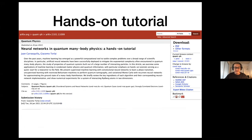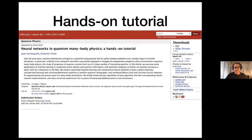Before I start, I wanted to mention that last week we posted this paper: 'Neural Networks in Quantum Many-Body Physics: Hands-On Tutorial.' We describe many of these techniques in that paper, including recurrent neural networks, and we provided code you can play with. It's very simple code but allows you to get started with all these ideas — variational Monte Carlo, quantum state reconstruction, and so on. I encourage you to check this out.